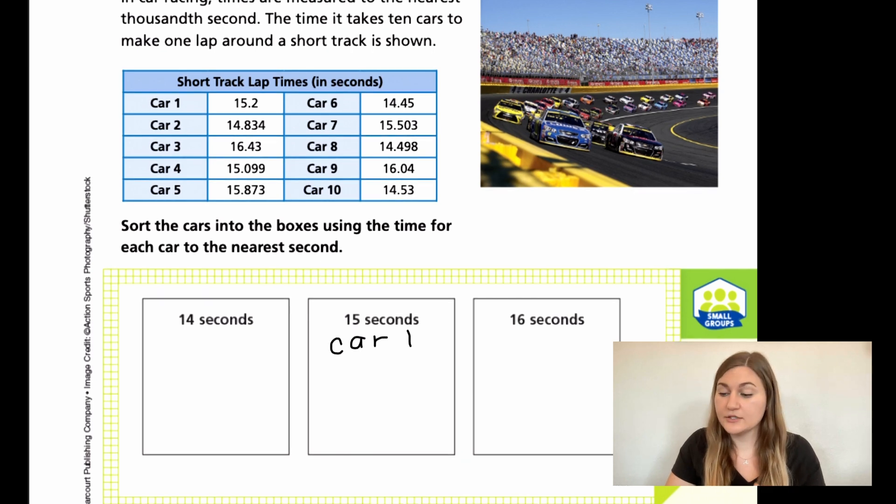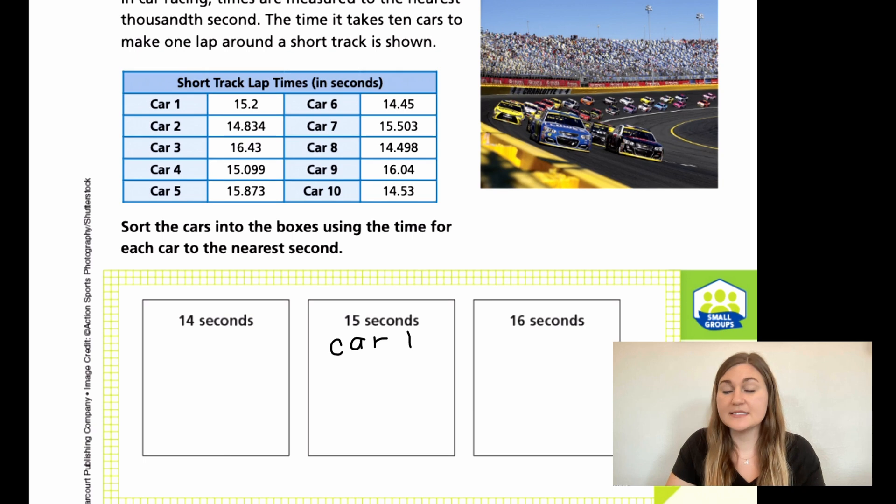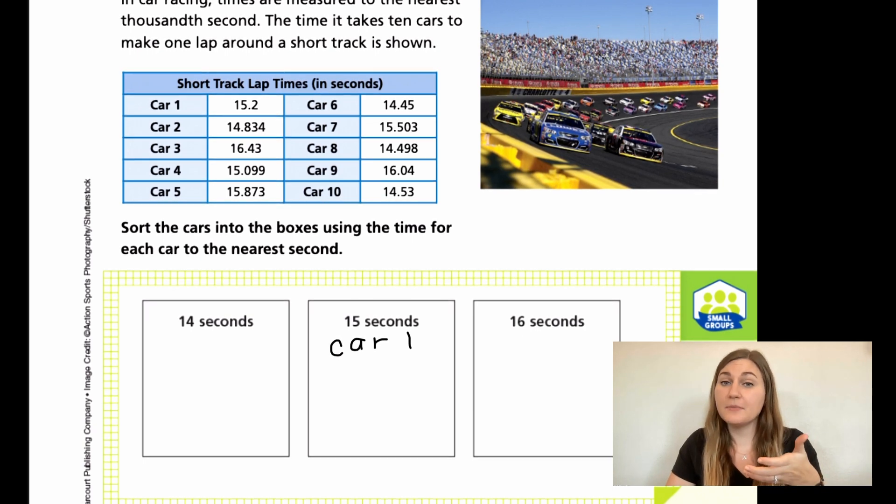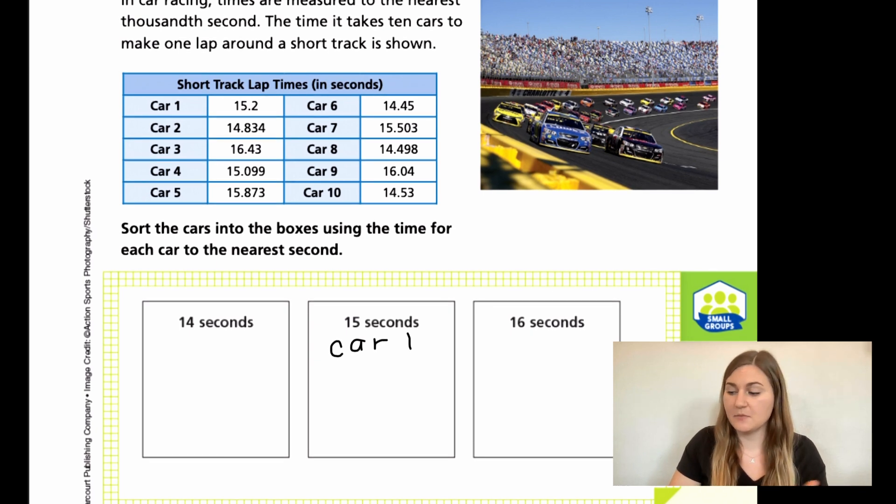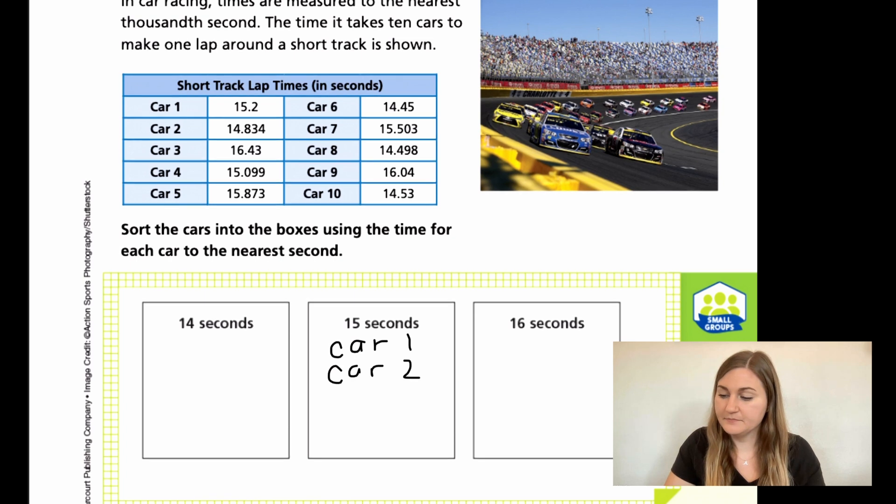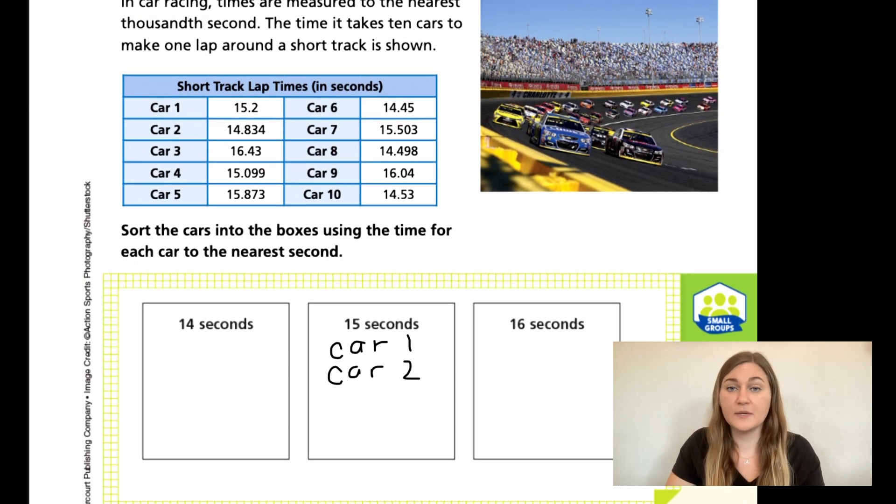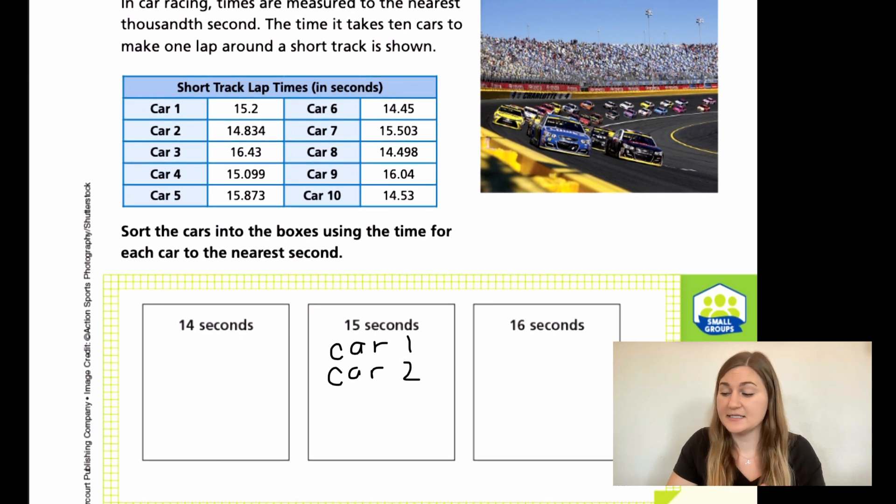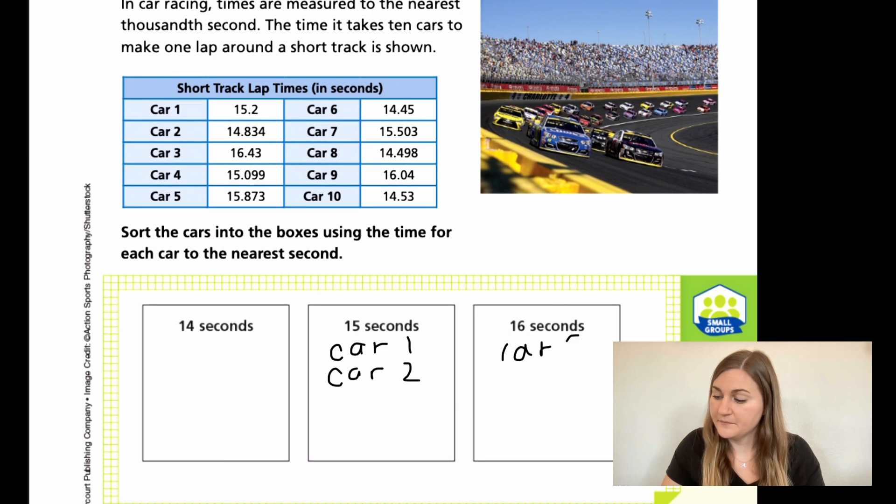Now moving down to car two, we have 14.834. Really all we need is that 8. That 8 is bigger than 5, so it's going to push us up into the next whole number, into that 15 second mark. So we're also going to put car two in this box. Now car three says 16.43. Again, all we need to look at is the .4. That is lower than 5, so it's going to keep us at 16. So we're going to put car three here.